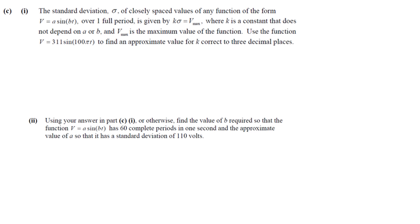The standard deviation of closely spaced values of any function of the form V is equal to A sine BT over one full period is given as K sigma is equal to V max, where K is a constant that does not depend on A or B, and V max is the maximum value of the function. Use the function 311 sine of 100 pi T to find an approximate value for K. So K sigma is equal to V max. So we have K, our standard deviation is 220, and the maximum is 311. So that means K is actually 220 divided by 311, and we're getting an approximate value corrected to 3 decimal places, 1.414.